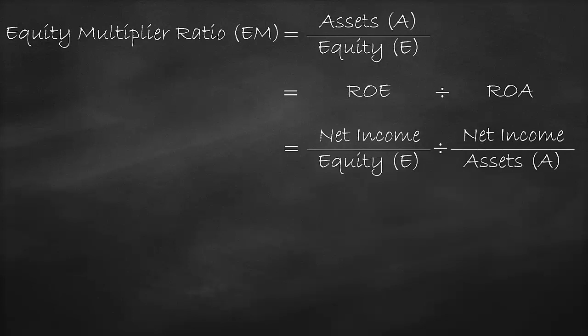Since we divide a ratio by a ratio, we can swap the numerator with the denominator and change the division sign to a multiplication sign. So the equity multiplier ratio equals net income divided by equity multiplied by assets divided by net income.